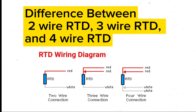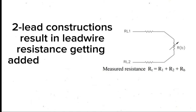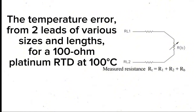The difference between two-wire, three-wire, and four-wire RTD: two-lead constructions result in lead wire resistance being added to the element resistance. The temperature error from two leads of various sizes and lengths for a 100-ohm platinum RTD at 100°C is significant.